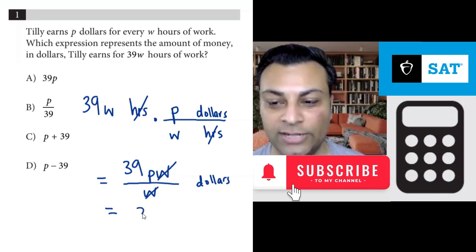You wind up with 39P dollars. So 39P is the answer which is A.